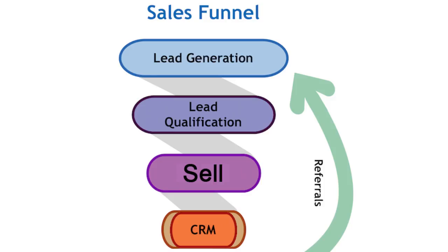In that first video I showed you the marketing funnel, and here is a sales funnel — there are some slight differences. I'm going to knock out sales funnels and then we'll get into the nuances later. In a sales funnel you have: lead generation, lead qualification, selling, and then CRM. You'll find multiple versions of a sales funnel online, but this is the simplest one to start with.